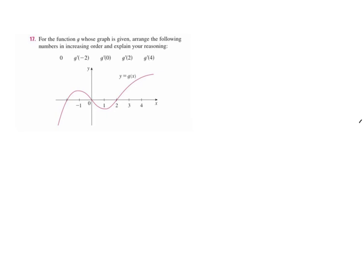I'm going to do a super quick explanation of number 17 from the 2.6 assignment. This problem shows the graph of g below and wants us to put these numbers in increasing order.